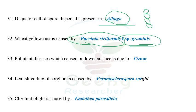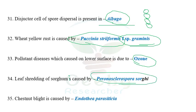The next question: which pollutant disease causes symptoms on the lower surface due to ozone? The ozone disease causes symptoms on the lower surface. The next question: leaf shredding of sorghum is caused by Peronosclerospora sorghi. Leaf shredding is otherwise called downy mildew of sorghum. Downy mildew of sorghum is otherwise called leaf shredding of sorghum, caused by Peronosclerospora sorghi.